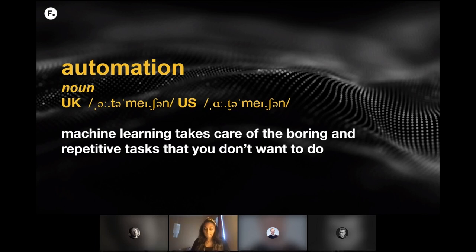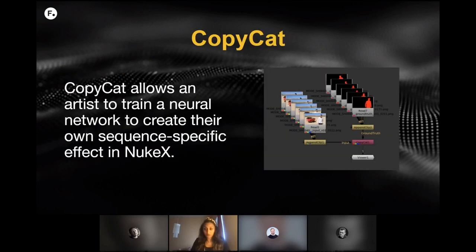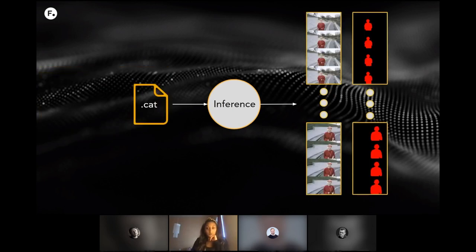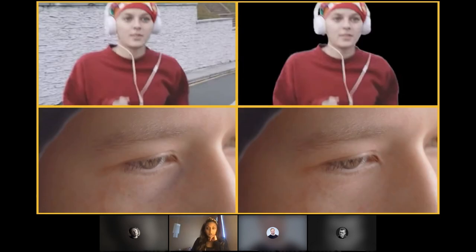So how are we actually doing that? The first tool I'll talk about is Copycat, which we released in Nuke 13. Copycat is a Nuke X plugin that allows a user to train a neural network specific to the sequence or set of sequences they're working on. You give the plugin a small set of before and after images that demonstrate an effect, and it learns to replicate the transformation from one to the other, storing that as a neural network in a cat file. You then load that cat file in the inference node where it can be applied to the rest of your sequence. So in terms of automation, you set up a script to demonstrate the effect and it takes care of the tedious stuff to reapply it to the other frames.